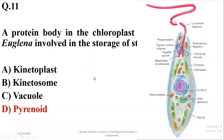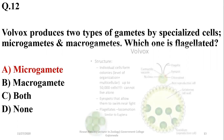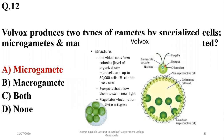Question twelve: Volvox produces two types of gametes — microgametes and macrogametes — by specialized cells. In all animals as well as in protozoa including Volvox, the microgametes, also referred to as male gametes, are flagellated, while macrogametes are non-motile.